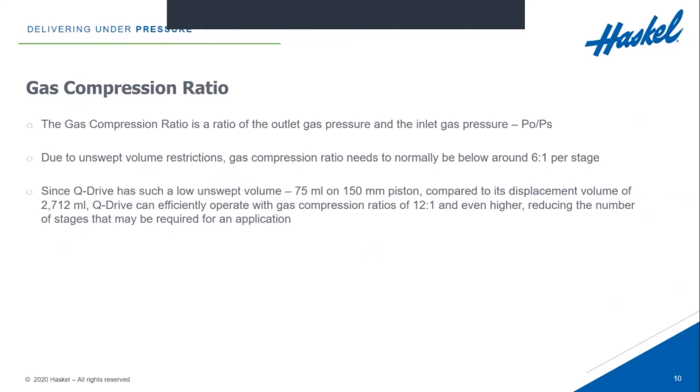The gas compression ratio is calculated by taking the desired outlet pressure and dividing it by the gas supply pressure. Due to unswept volume restrictions, in most gas Haskell boosters, we try to keep that number around six to one, sometimes a little higher, sometimes lower. We try to target around five or six to one.